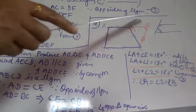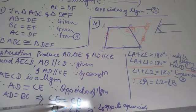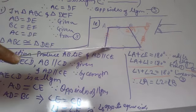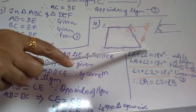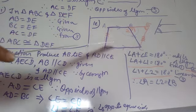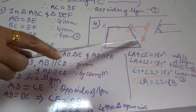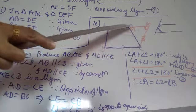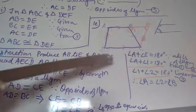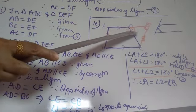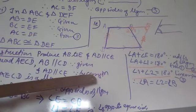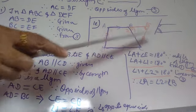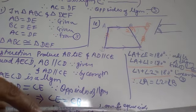Since AECD is a parallelogram, its opposite sides must be equal, so AD equals EC. But it is already given that AD equals BC, therefore BC equals CE. This means triangle BCE is an isosceles triangle, and hence angle 1 (at point B) equals angle E.